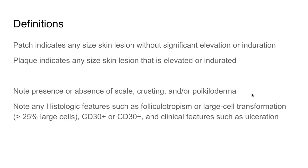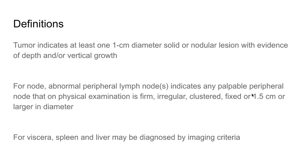It's important to note secondary changes including scale, crusting, or poikiloderma, and histological features such as folliculotropism or large cell transformation — greater than 25 percent — whether CD30-positive or CD30-negative, and other features such as ulceration. A tumor is defined as lesions with at least one centimeter diameter, solid or nodular, with evidence of depth and vertical growth. Abnormal peripheral lymph nodes are palpable nodes that are firm, irregular, clustered, fixed, or 1.5 centimeters or larger. Visceral involvement including spleen and liver can be diagnosed on imaging.